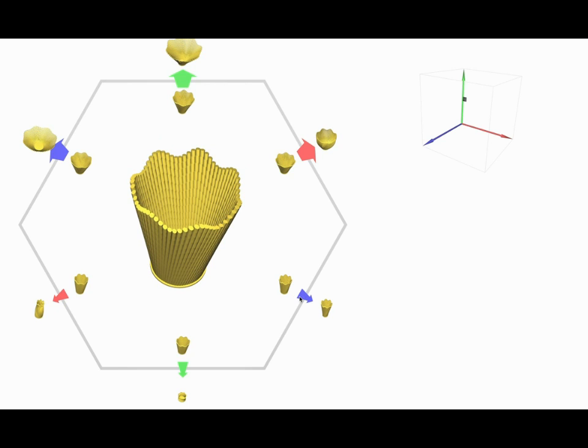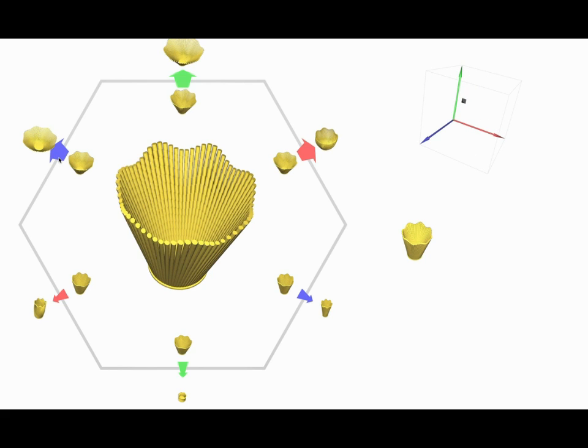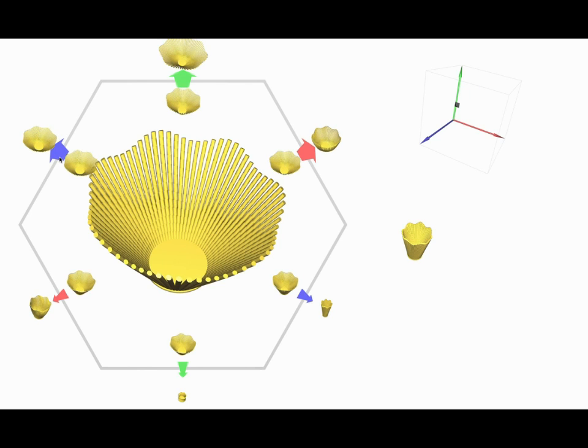Our system allows users to explore procedural modeling rule sets using a low dimensional generative design space learned by an autoencoder network. The user is able to navigate this space and save models they like to use for further model synthesis using interpolation.